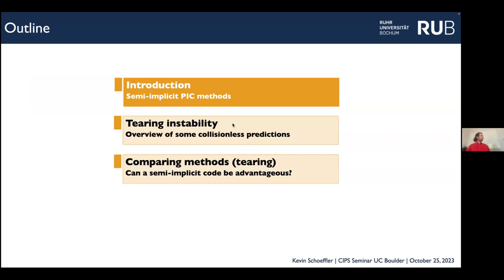I'm going to divide this presentation into three main parts. First, I'll introduce the semi-implicit PIC method and how you can use it for a relativistic case — and when you might not want to. Then I'll show that the code works well compared to an explicit code using a couple of examples, including the tearing instability. Finally, I'll compare explicit and implicit methods and show that it could be advantageous, and look a bit into what we could look forward to in the future.